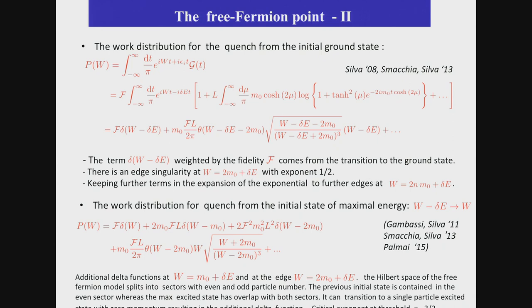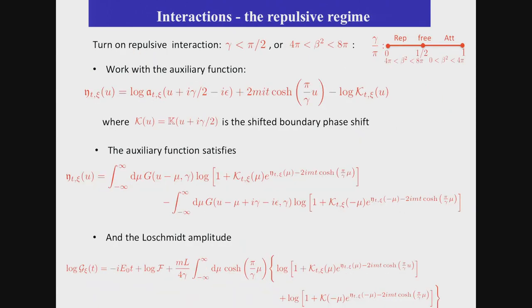We can find the work distribution for the free case when we start from a ground state. We do the Fourier transform of this expression. We find, as expected, a delta function multiplied by the fidelity. And here we find a critical exponent of half, characterizing the threshold. A work distribution for a quench, if I start from the maximal energy initial state, would be similar, but with new thresholds. And the critical exponent is going now to be minus 3 halves.